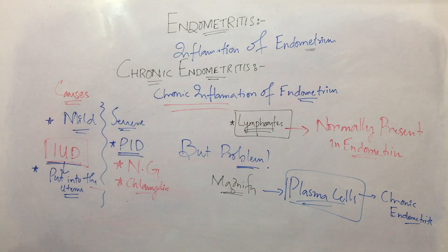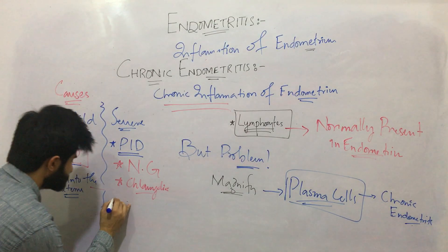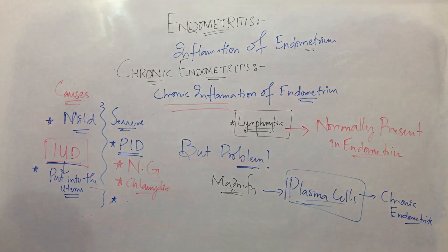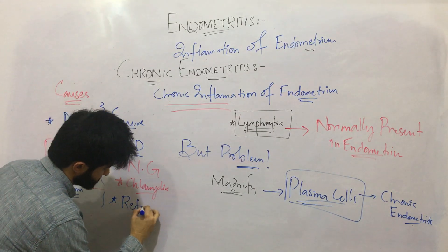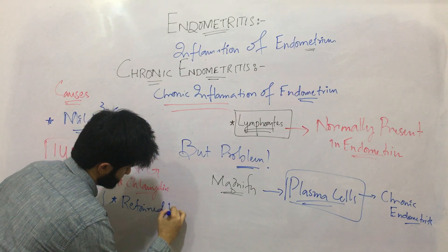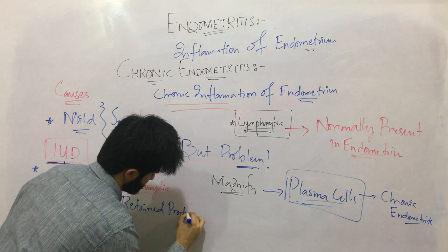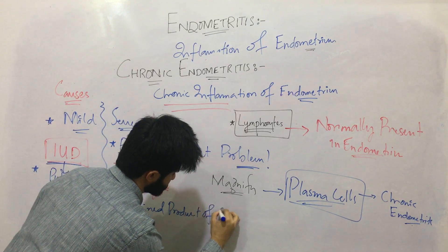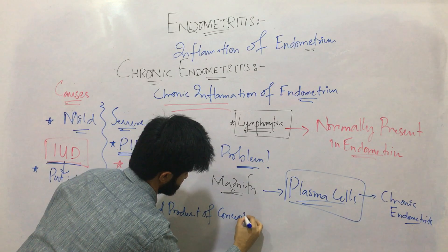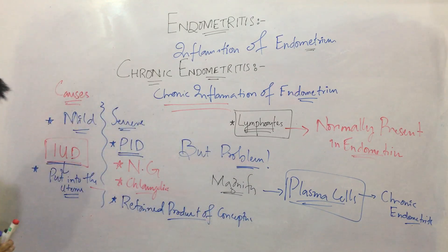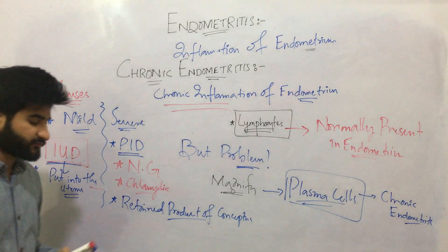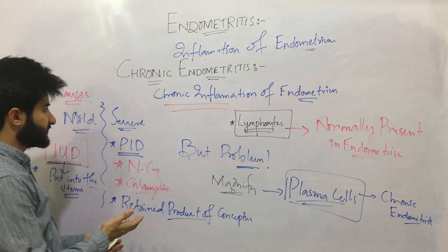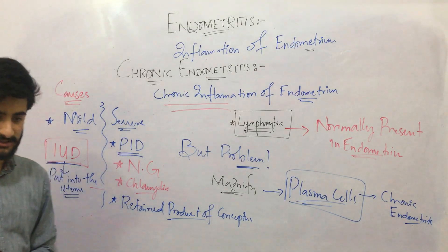Another cause that can cause severe endometritis is Retained Product of Conceptus. Retained Product of Conceptus will again serve as a nidus for inflammation, and if this is kept for a long period of time, it will result in chronic endometritis.